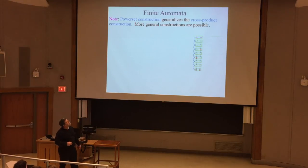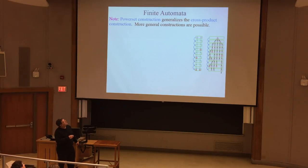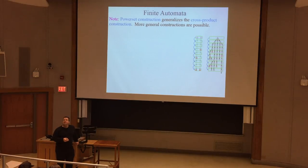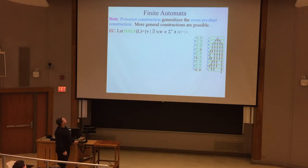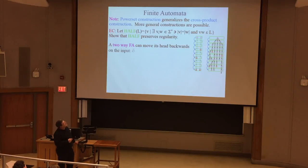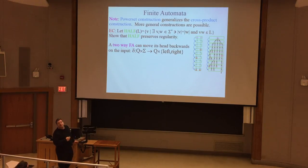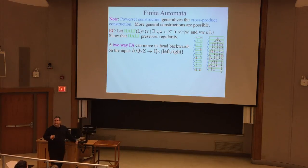For extra credit: 'half of a language' is defined as the first half of all strings in a language, and that operator preserves regularity - you can use something like the power set construction to prove this. Similarly, two-way finite automata - which can move their read head backwards or forwards - also don't gain any extra recognition power over one-way finite automata, and a variation of the power set construction can prove that too.